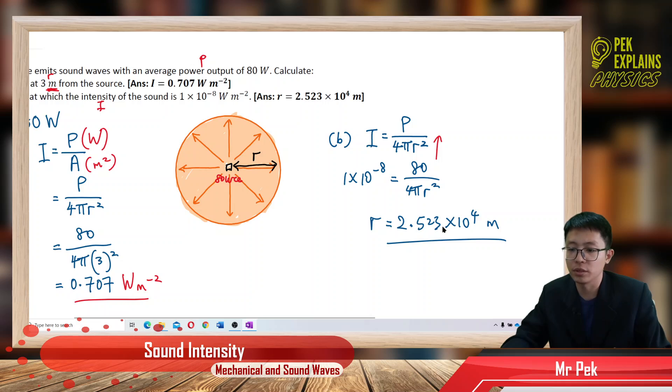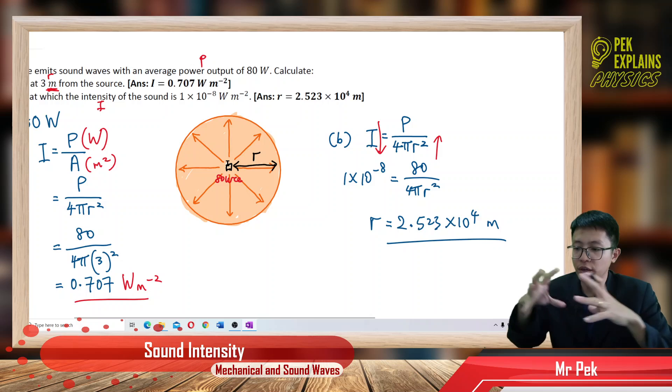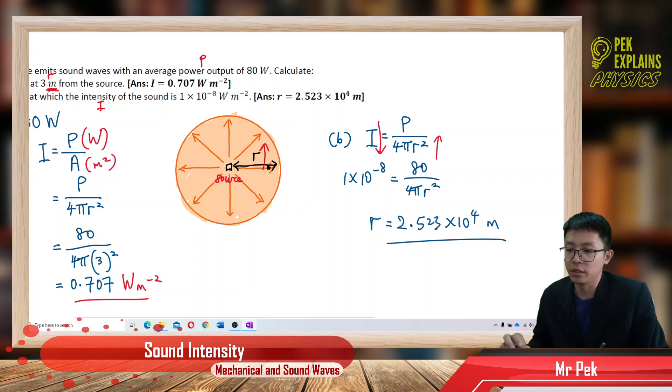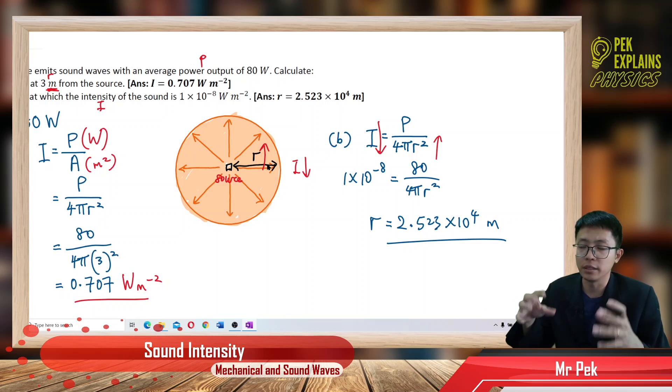The further from the source, the lower the intensity. That's because the sound is distributed to a sphere area. The sphere becomes bigger and bigger. So the further the distance, of course the intensity becomes lower, because the energy is already distributed to a very big area.